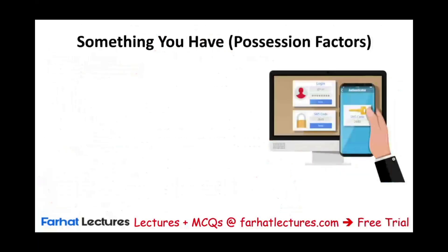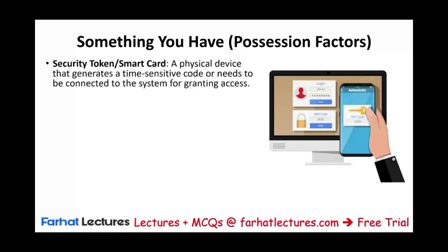Something that you have is a little different. Here we're talking about a security token or smart card, or receiving a code to your cell phone before you can access the information. It's a physical device that generates a time-sensitive code or needs to be connected to the system for granting access. Tokens are basically a piece of hardware that generates numbers randomly every 30 seconds. After you put in your login and password, in certain banking systems, you need that token to generate a PIN number. So even if you lose your password, an attacker would also need the token for the information to be compromised.